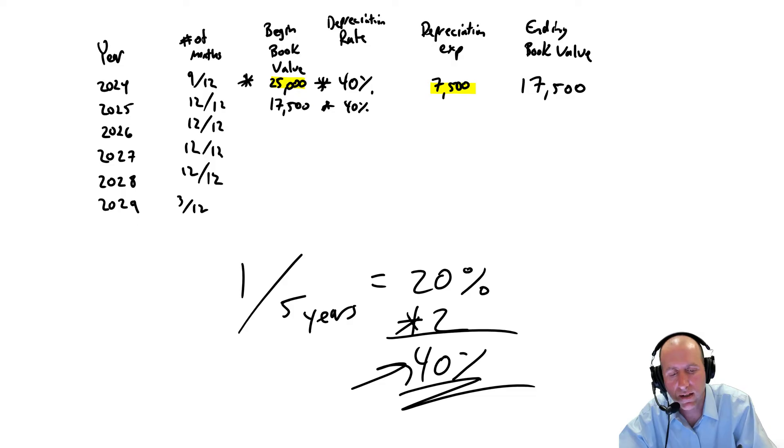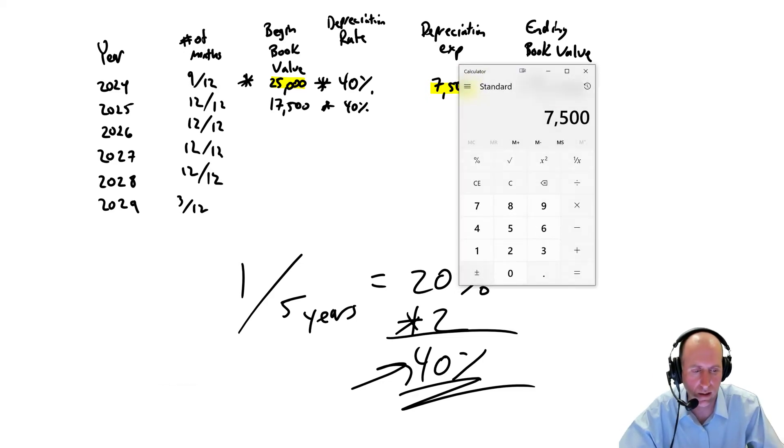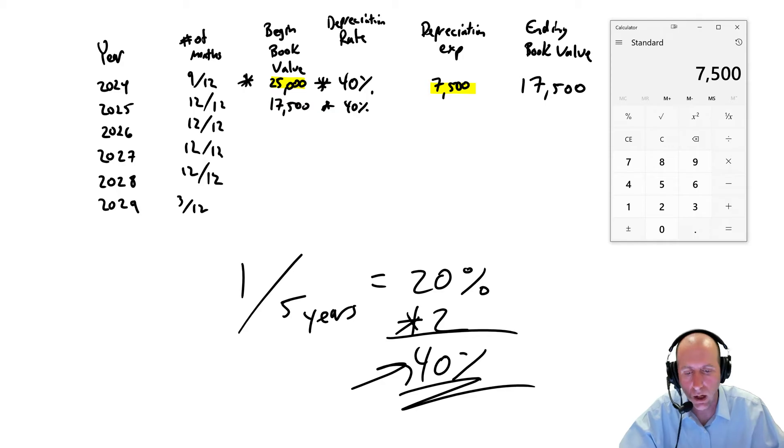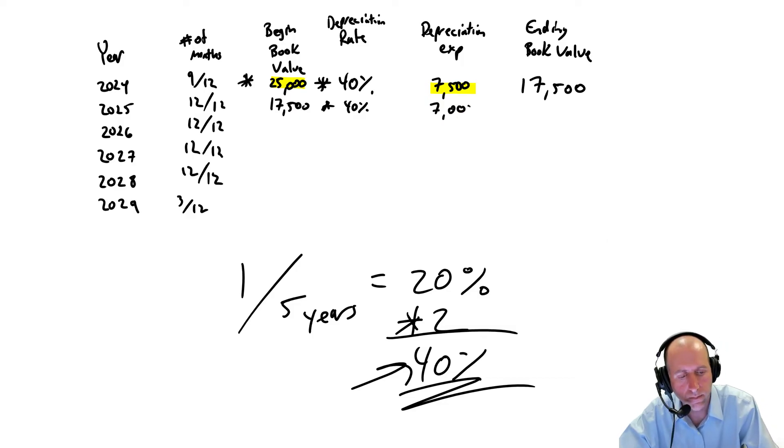My beginning book value for year two is $17,500. My rate, still 40%. Twelve twelfths, I'm not even going to bring into the calculation, it's one. One times anything is just the same thing. Only partial years does this really matter. So $17,500 times 40% is $7,000. I had $17,500, depreciating it by 7, now I'm down to $10,500.